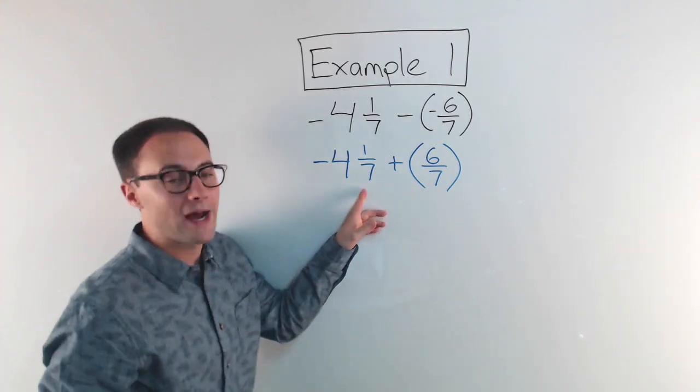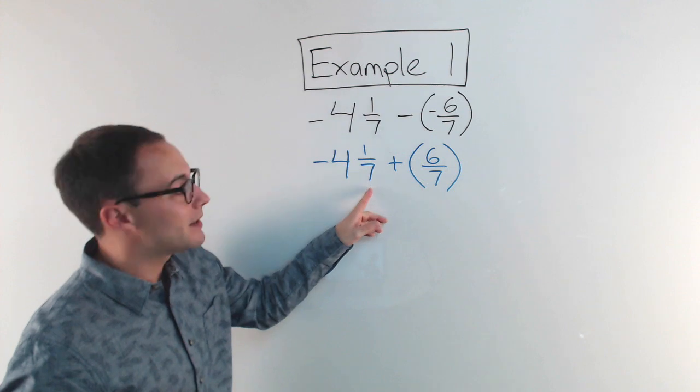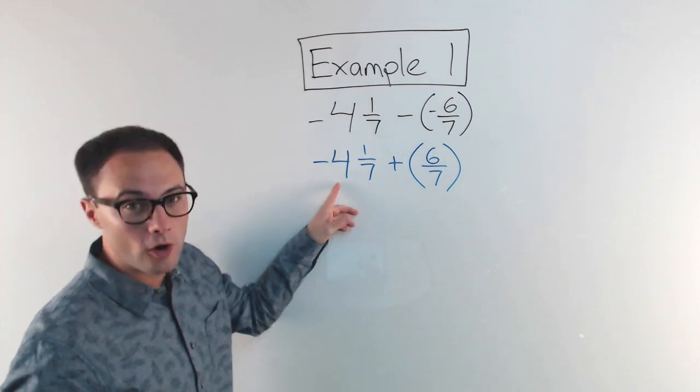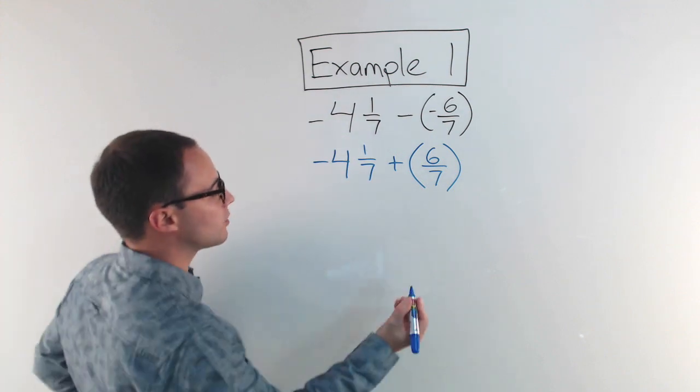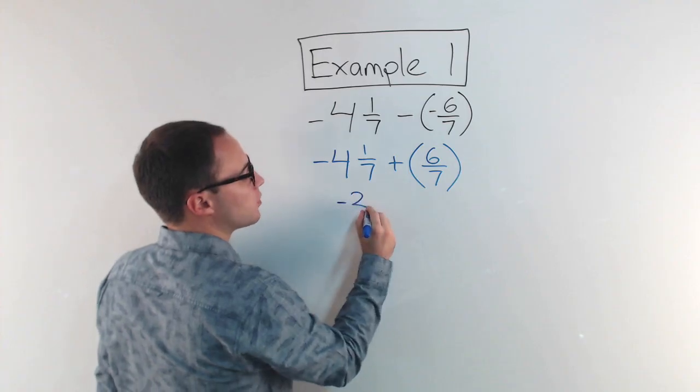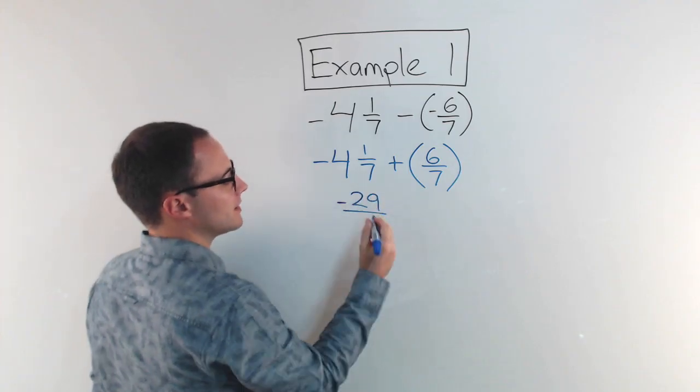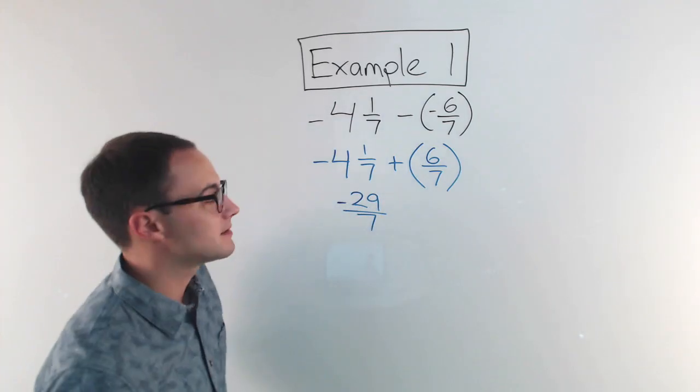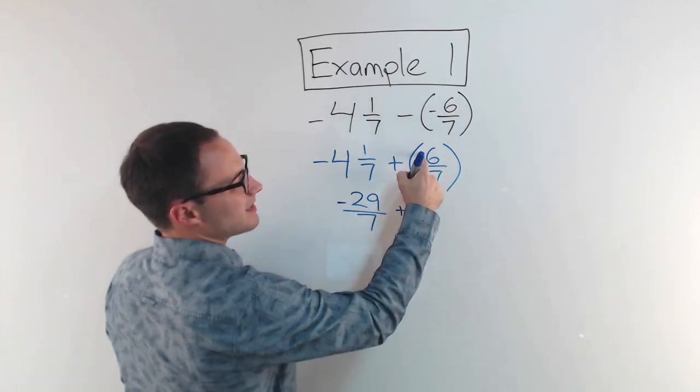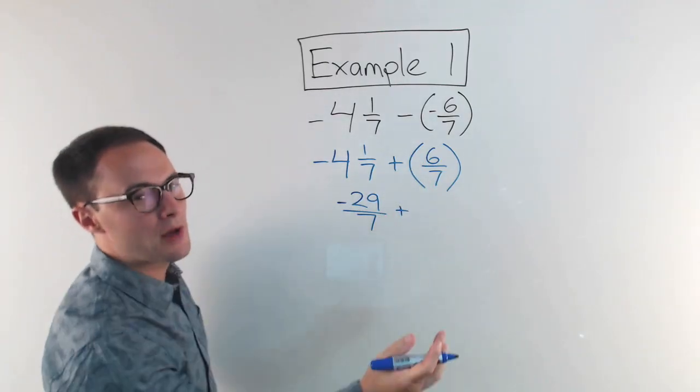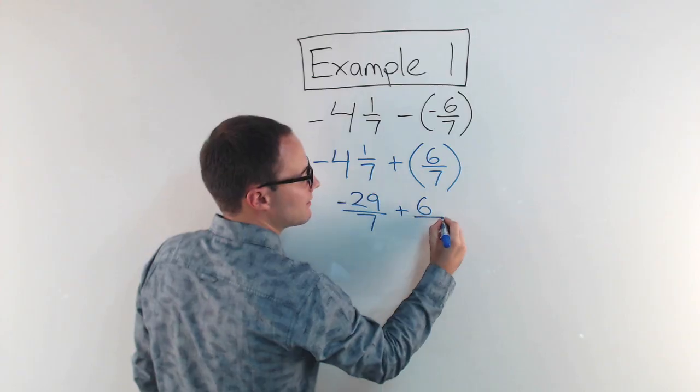So to change it to an improper fraction, I'm going to do the denominator times the whole number. So 7 times 4 is 28 plus 1 is 29. So I have negative 29 over 7. Denominator stays the same. Since that's positive, I don't really need the parentheses anymore. So 6/7.